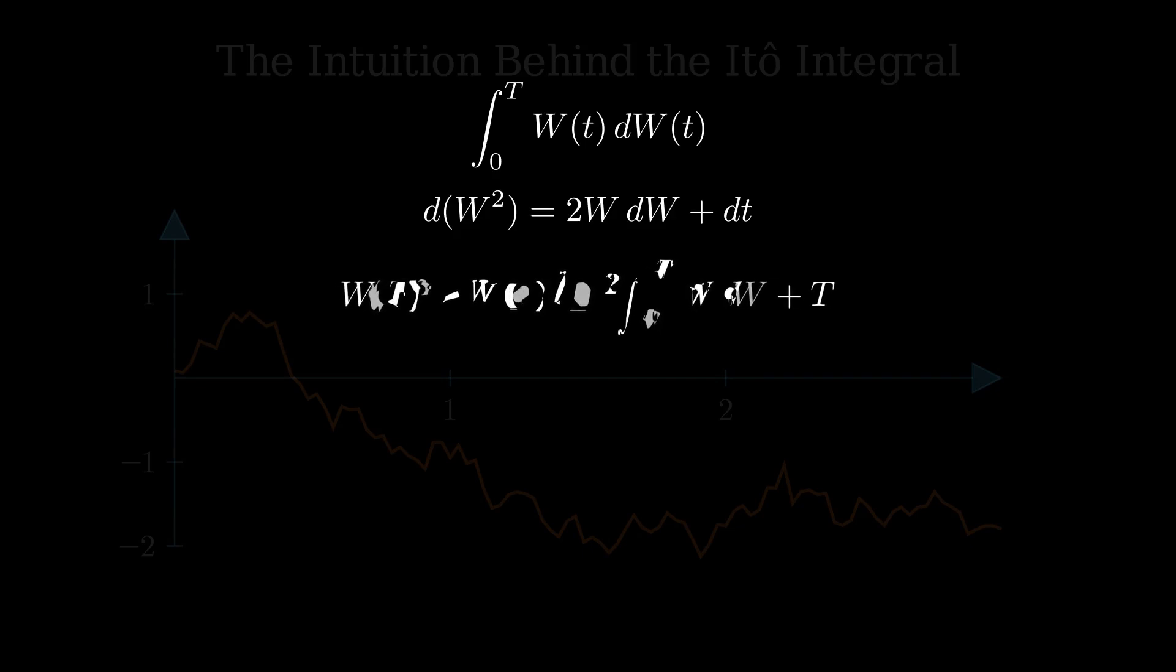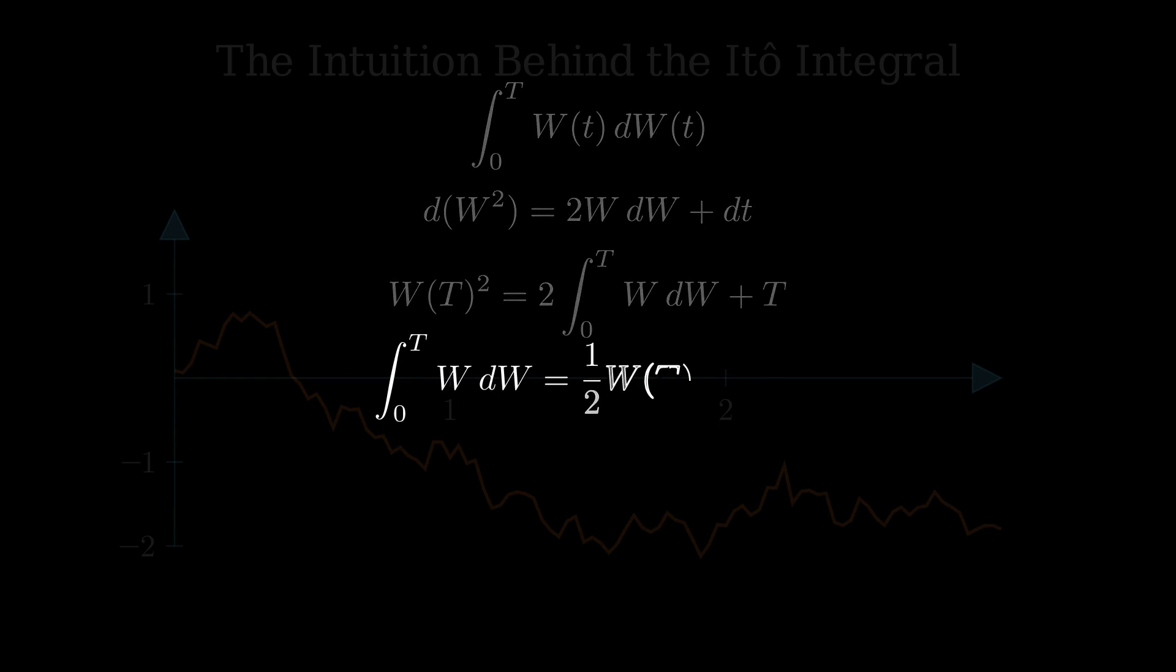We're getting closer. Now let's solve for the integral. Rearrange the equation, divide by 2, and we find that the integral from zero to t of W with respect to W equals ½W(t)² - ½t. This is our answer.